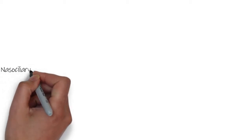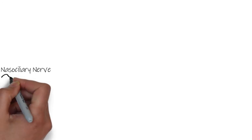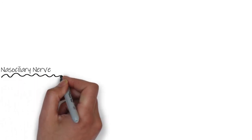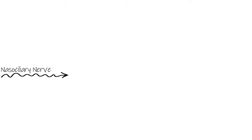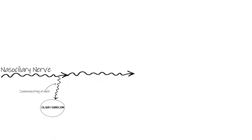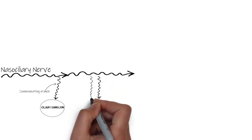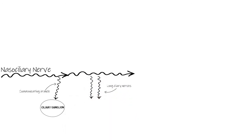The third and final branch of the ophthalmic nerve is the nasociliary nerve. After escaping the cranium and entering the orbit, it travels forward and first gives off a communicating branch to the ciliary ganglion. It then gives off the long ciliary nerve, and the posterior and anterior ethmoidal nerves.